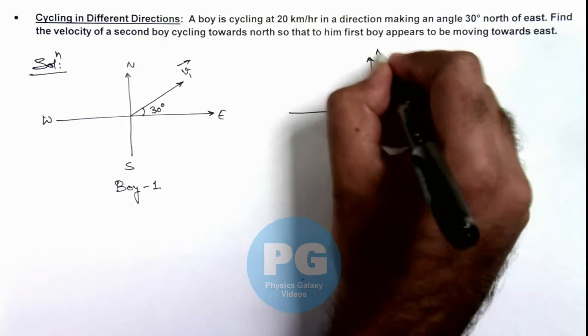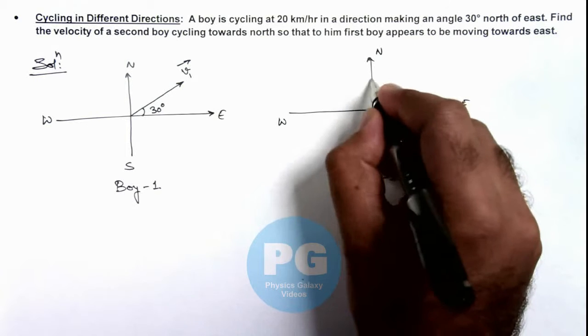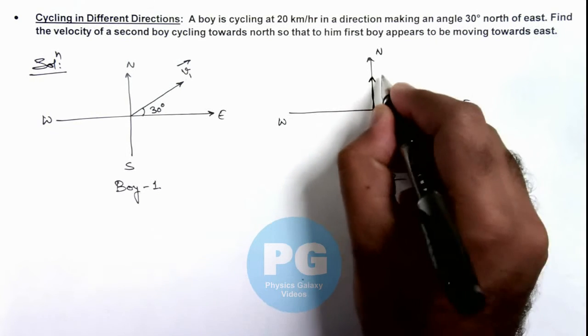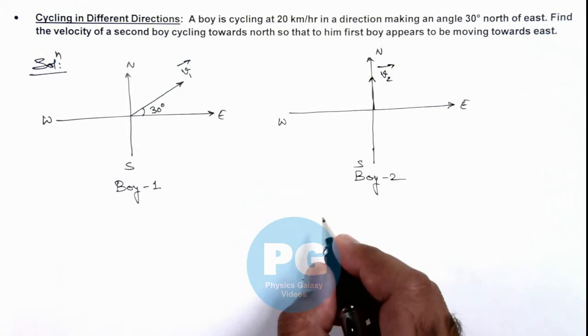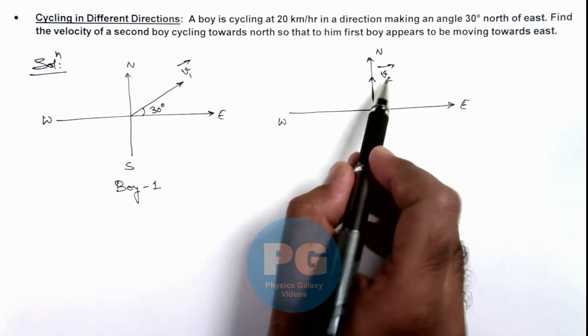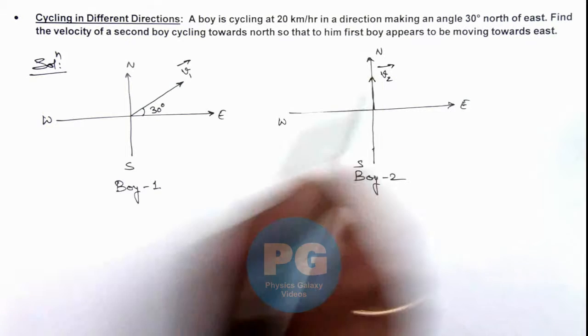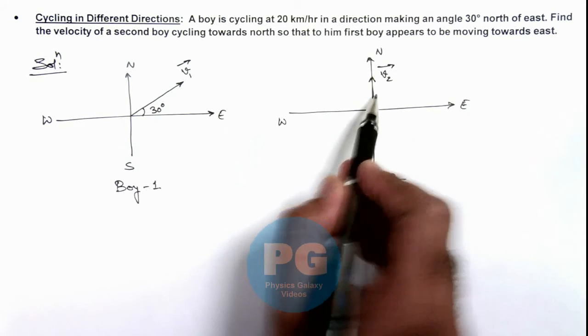So in this situation, we are given that the v2 vector is such that the velocity of 1 with respect to 2 would be toward east.